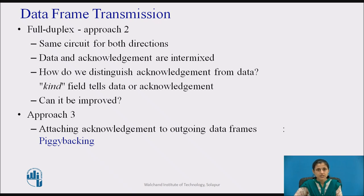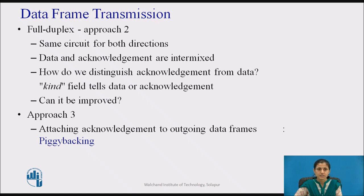A better idea is to use the same link for data in both directions. In this model, the data frames from A to B are intermixed with the acknowledgement frames. By looking at the kind field in the header of an incoming frame, the receiver can identify whether the frame is data or an acknowledgement.